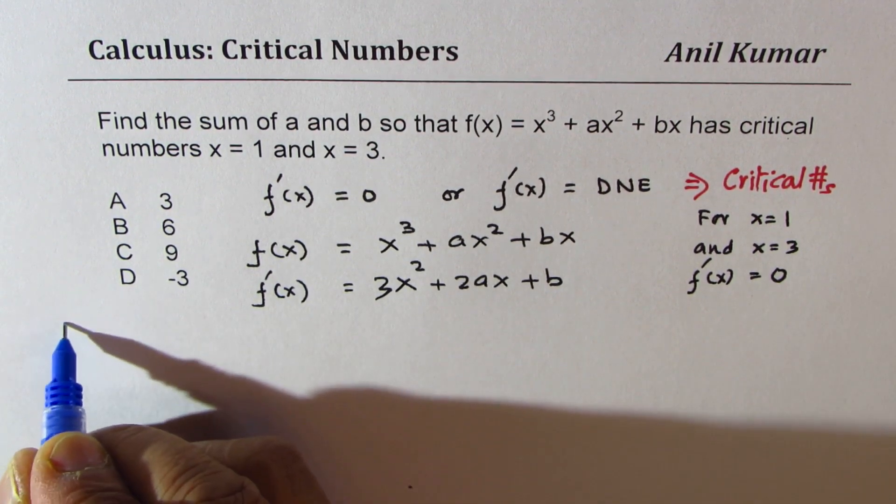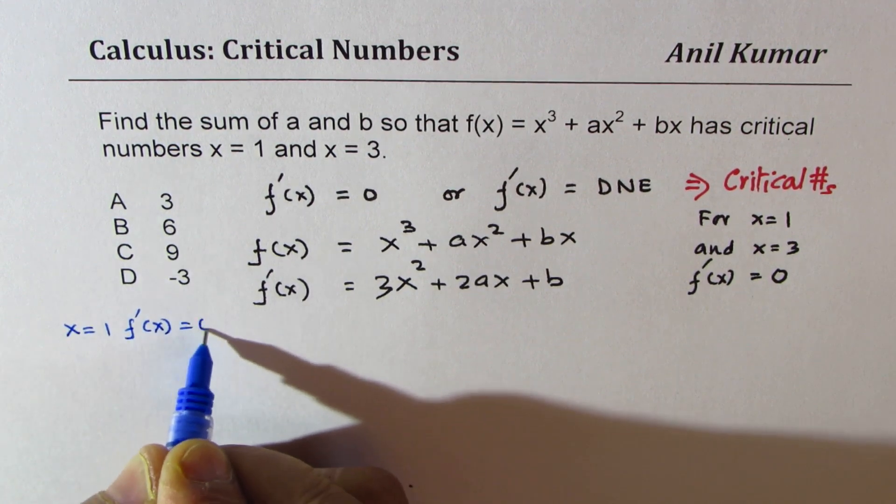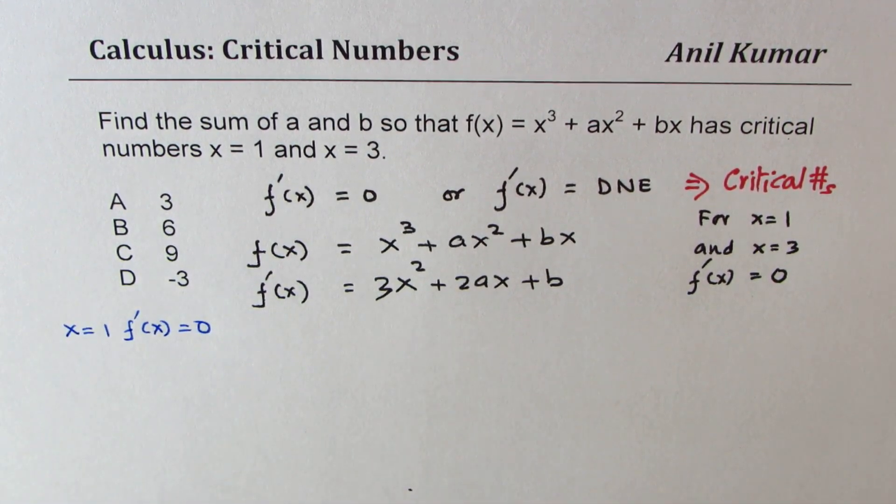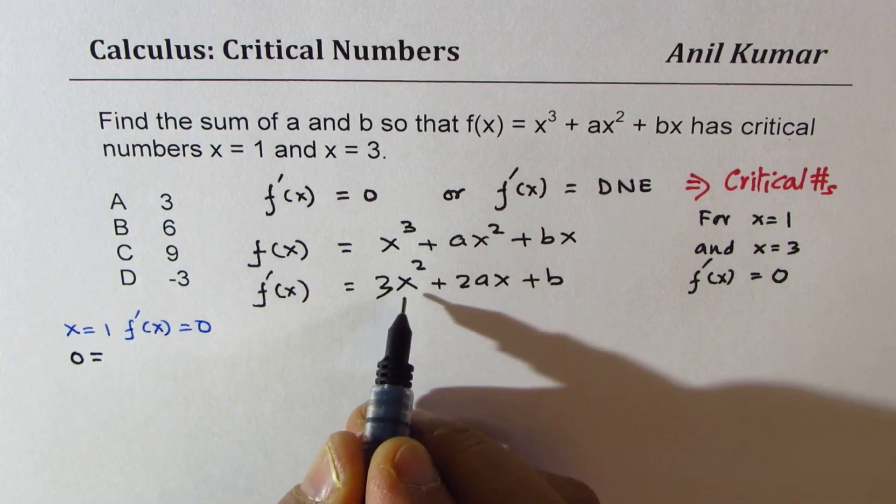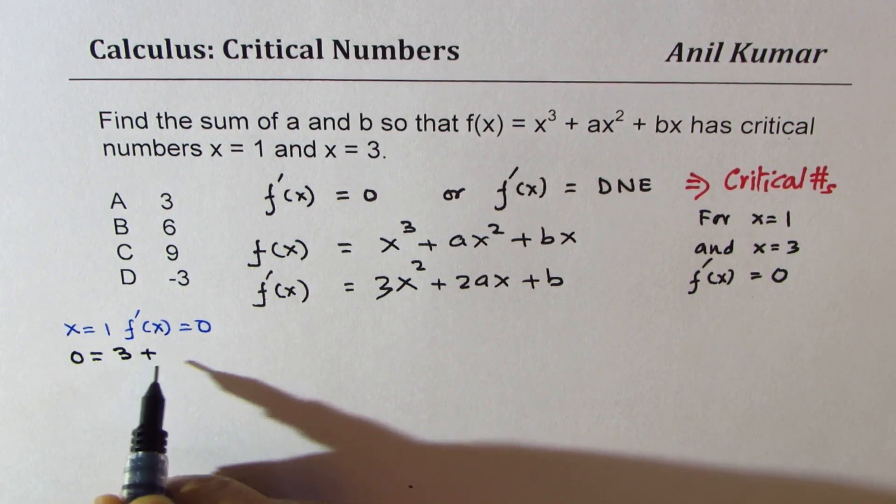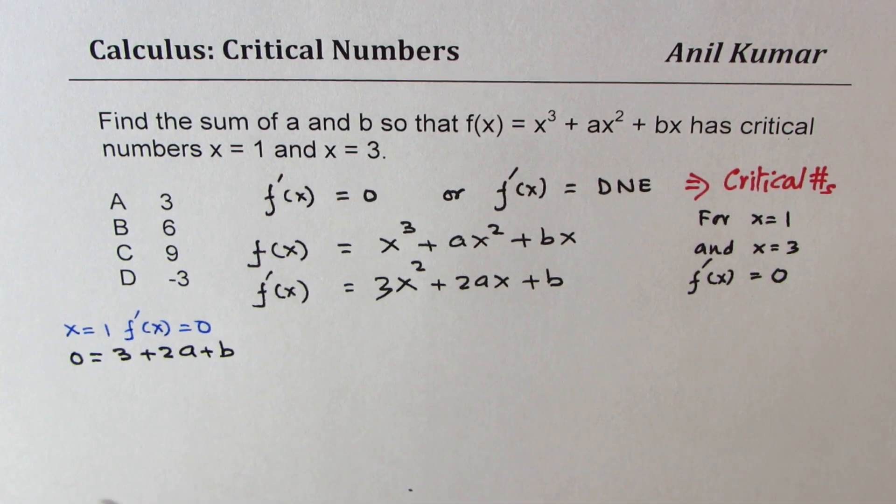Let's write down the equation which is 0 = 3 + 2a + b. Substituting x = 3, again we have the derivative equal to 0. We get the second equation which is 0 =